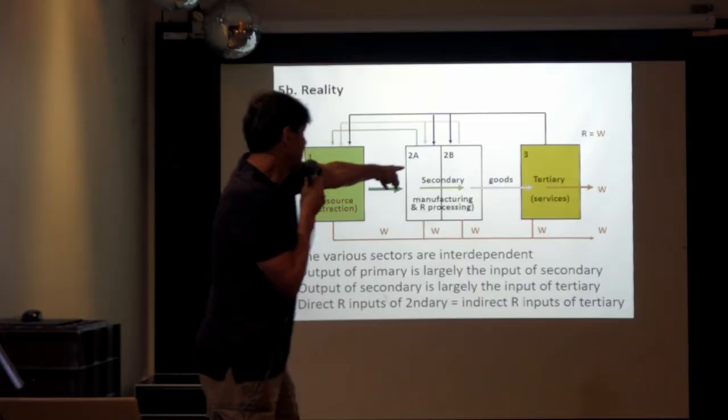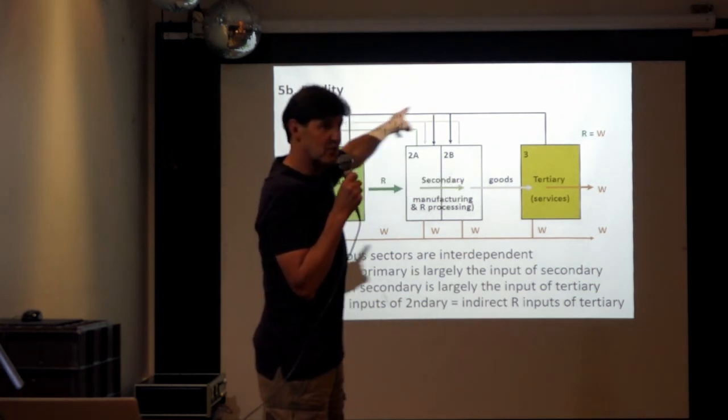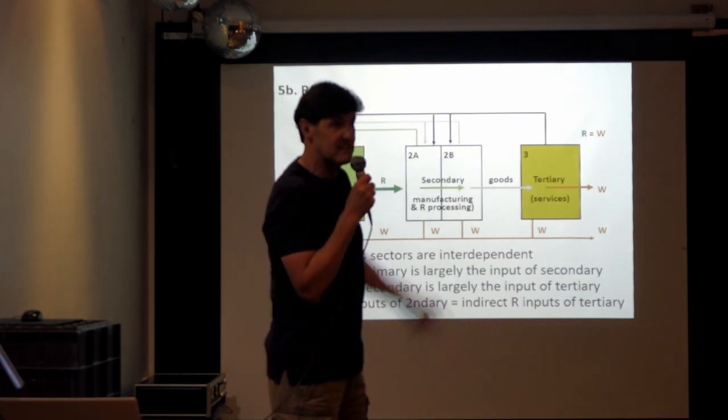The key point is that the great majority of the output of the primary sector is input into the secondary sector, and the great majority of the output of the secondary sector is input into the tertiary sector. When studies of the tertiary sector claim its environmental impact is much lower, they only look at direct resource inputs — they don't account for the indirect inputs going into the primary and secondary sectors that feed the tertiary sector. In fact, the transition towards services does not lower environmental impact.